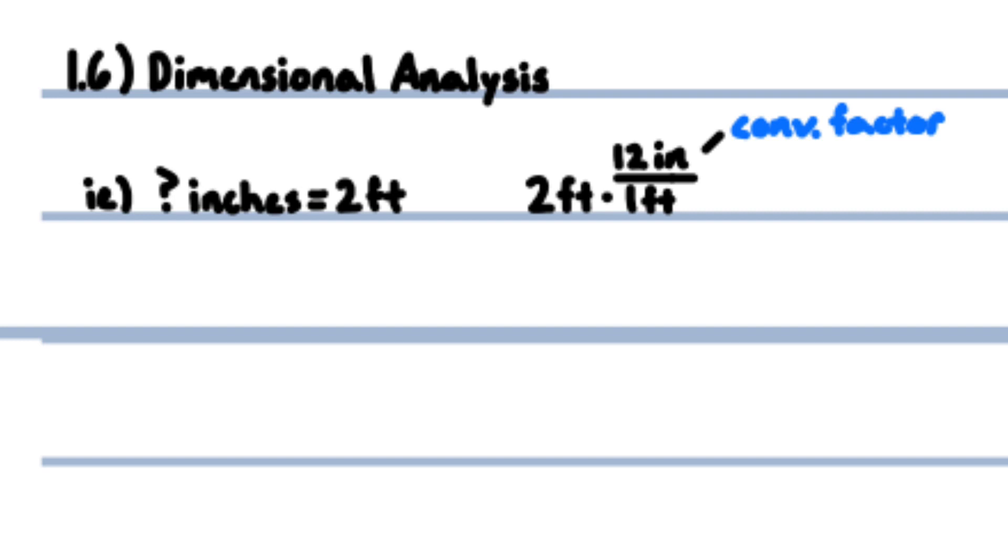Dimensional analysis: dimensional analysis is a method to convert between units. For example, how many inches in two feet? Multiply two feet by a conversion factor that is equal to one to strategically cancel the feet units, leaving an inches unit. Two feet times twelve inches over one foot gives twenty-four inches.